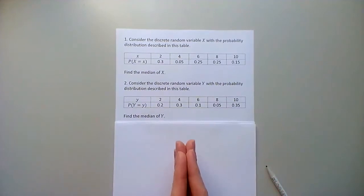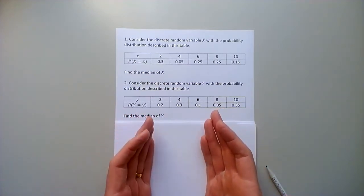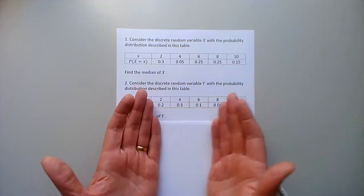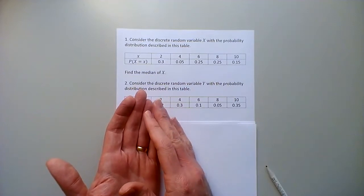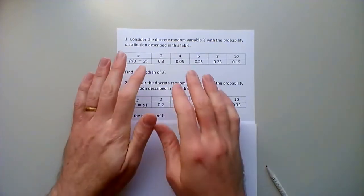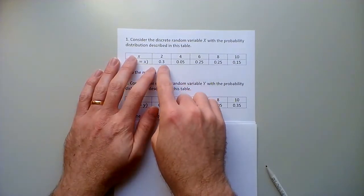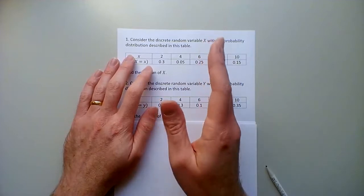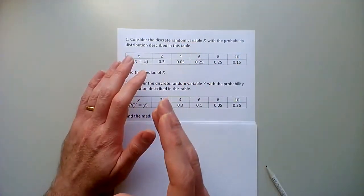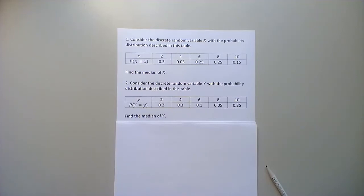The median is supposed to be a number that has half the probability on one side and half the probability on the other. Usually there isn't one that has the same probability on both sides, but that's okay — as long as it's less than half on both sides and the transition between less than half and more than half happens during that number. What I need to do is add up how much probability is less than each value, and the moment I get to more than a half, everything after that can't be the median.